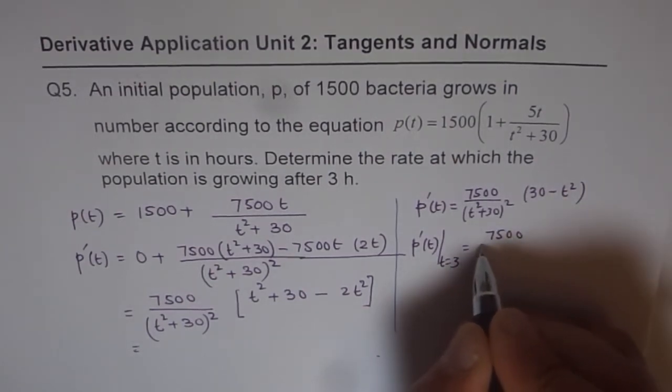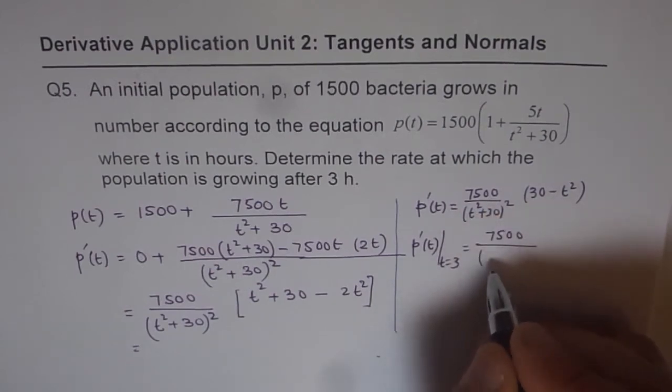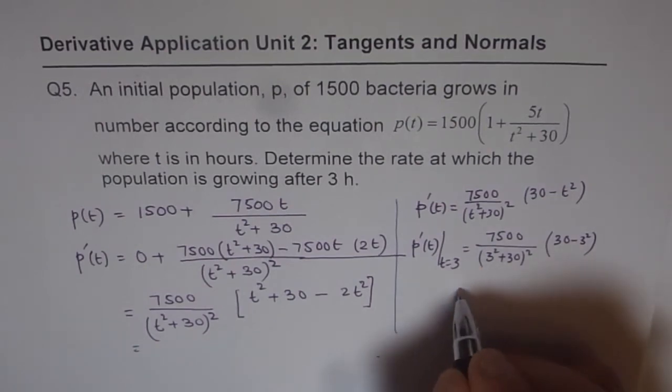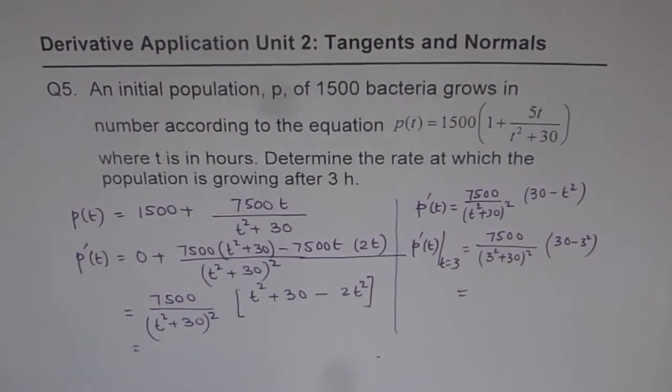So we get 7500 over 3 squared. So 3 squared, let me write 3 squared itself, plus 30 whole square times 30 minus 3 squared, which is 9. Now we can use the calculator and then punch in the values and get our answer. So the answer is 7500 over 3 squared is 9. 9 plus 30 is 39 whole square times 30 minus 3 squared, which is 30 minus 9, which is 21.